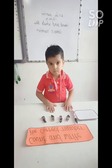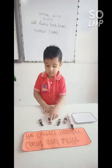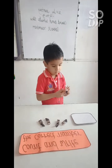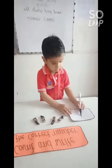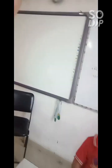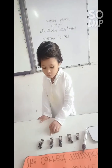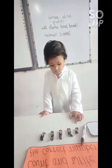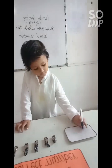Krishna, now count the candies. 1, 2, 3, 4, 5, 6, 7. Now write the number. 1, 2, 3, 4, 5, 6, 7. Now write the correct number in the box. 5.